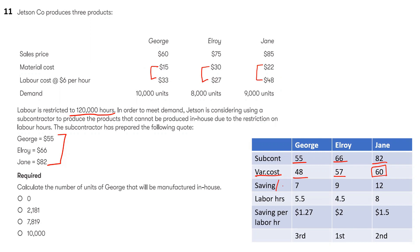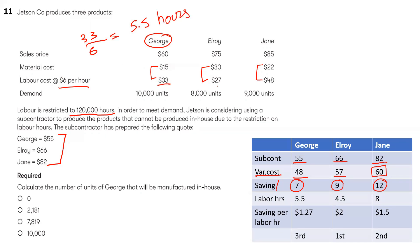The extra cost of buying externally is $7, $9, and $12. Because labor is in short supply, we divide extra cost by labor hours per unit. Labor is $6 per hour: George uses 5.5 hours per unit ($33 ÷ $6), Elroy uses 4.5 hours ($27 ÷ $6), and Jane uses 8 hours ($48 ÷ $6). Dividing extra cost by hours gives the extra cost per labor hour.